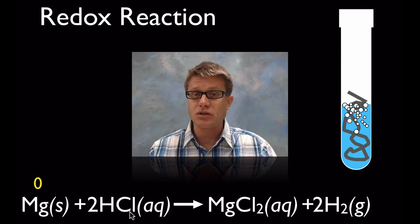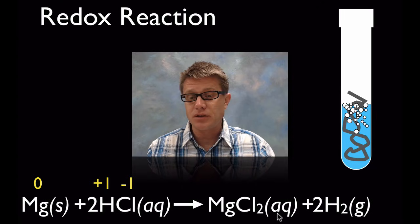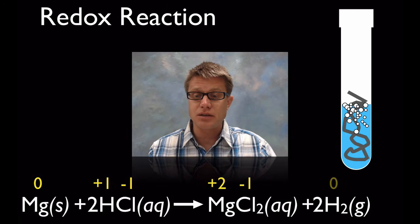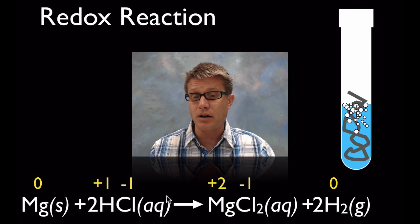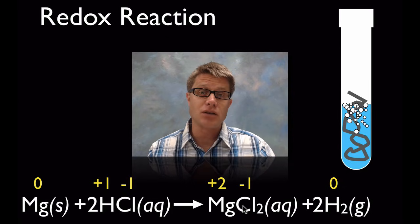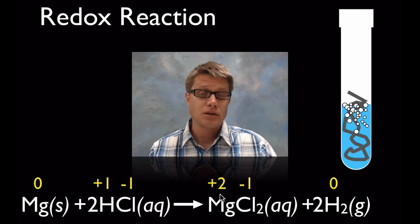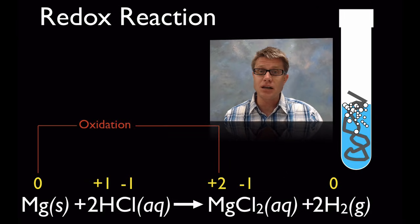Looking at hydrochloric acid in aqueous solution: chlorine is minus 1 and hydrogen is plus 1. On the product side for magnesium chloride in aqueous solution: chloride is minus 1, and since we have 2 of those, magnesium must be plus 2. Hydrogen gas on this side is 0 because it's all by itself. Chlorine stays at minus 1 on both sides — it's neither oxidized nor reduced. Magnesium goes from 0 to plus 2, meaning it's gotten more positive, so it's lost 2 electrons — that is oxidation.